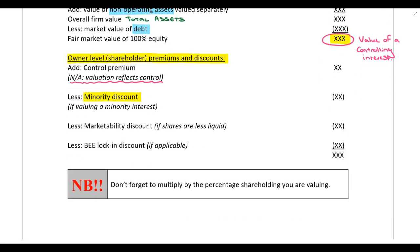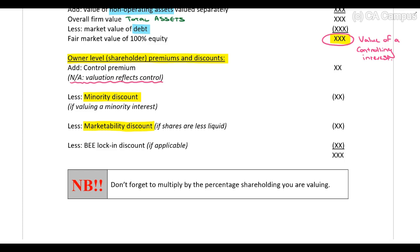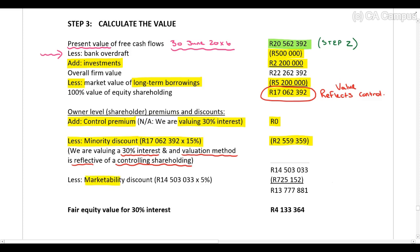Next we need to consider whether a marketability discount needs to be deducted. We deduct a marketability discount if the shares are less liquid — in other words, if it's more difficult to sell the shares. Avery is a Pty Limited, a private unlisted company, so it's definitely more difficult to sell the shares, meaning we need to deduct a marketability discount. You can refer to page four for the ranges, but I'm deducting a marketability discount of five percent.